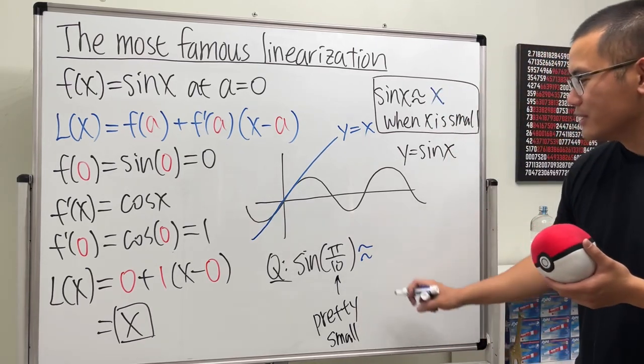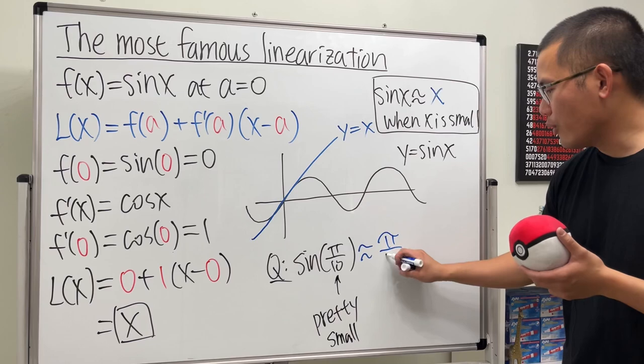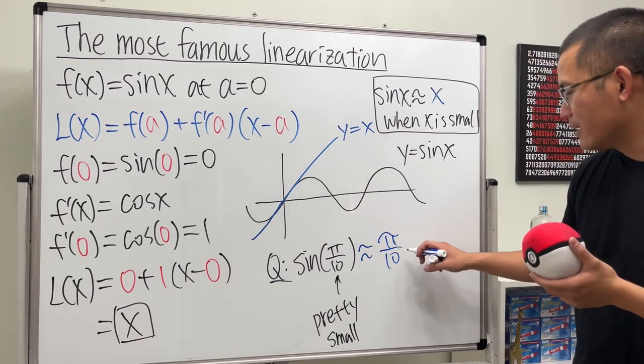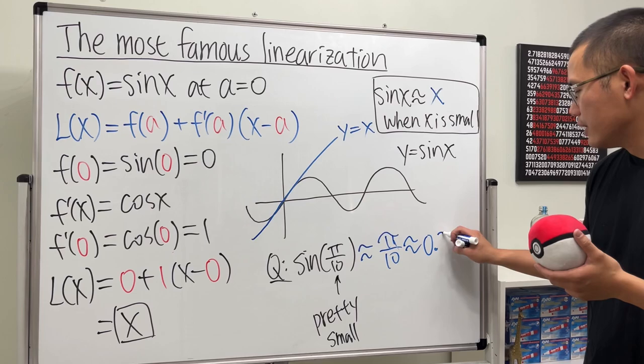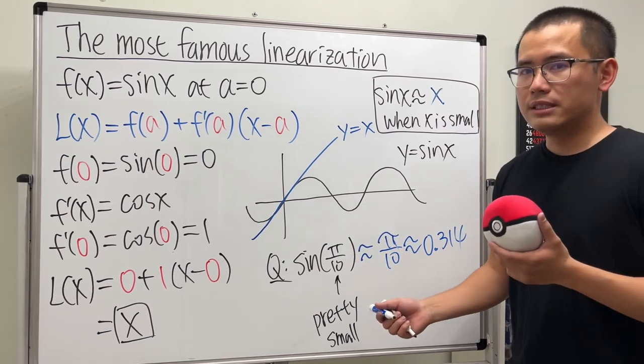So you can just say this is approximately π over 10, which, if you would like, this right here is approximately 0.314. And go ahead, use your calculator, and you can see that.